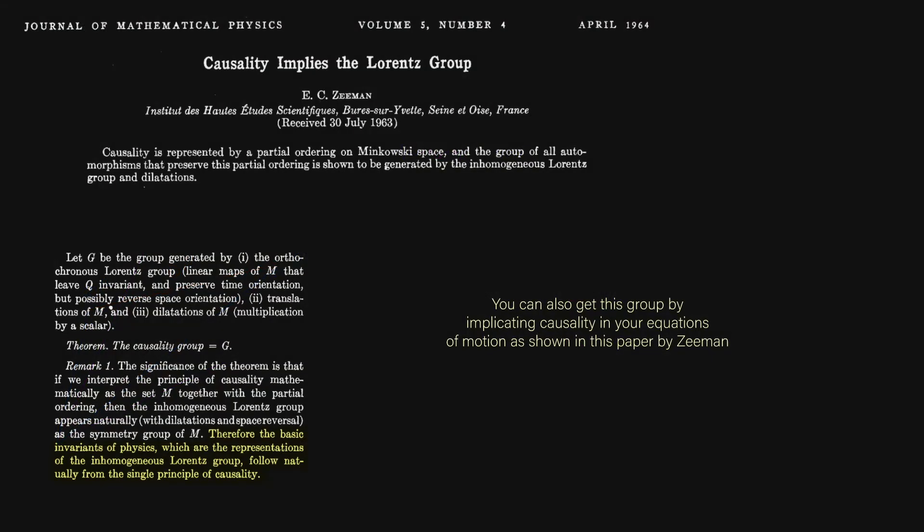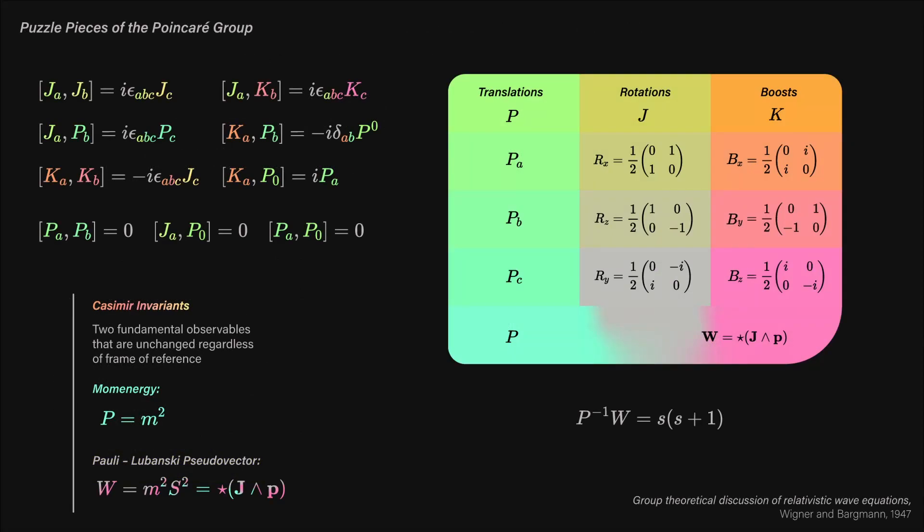Ideally then, you want to write down a set of elements that do all of these movements and keep spacetime constant. This then forms the Poincaré group, which has all these tiny puzzle pieces to it. The elements of this group are generators of movement, meaning they're infinitesimal versions of regular movement and behave as these geometric numbers.